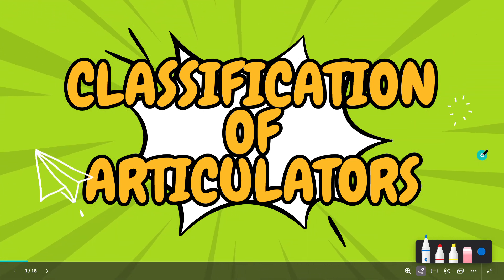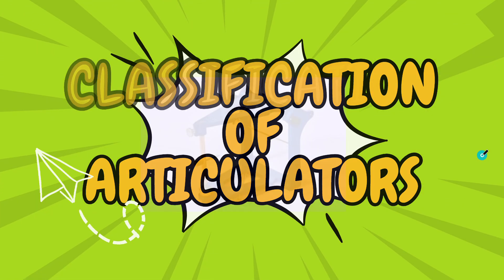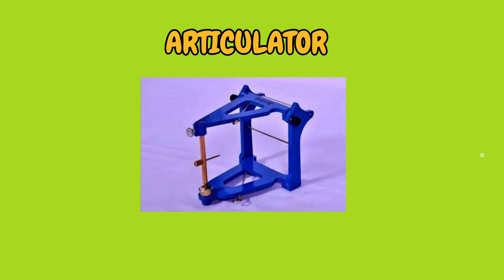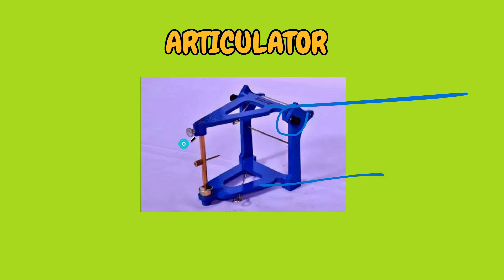We will see about classification of articulators. You all have seen an articulator in your preclinical lab or your clinical lab. This is a mean value articulator. You have the upper member, the lower member, the condylar part, the incisal rod, the mid incisal pin and the incisal table. These are the parts of the mean value articulator.